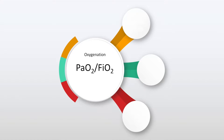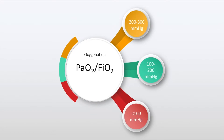The oxygenation as discussed in the previous slide is expressed as a ratio between the PaO2 and FiO2. We have three distinctions of this ratio: between 200 and 300, between 100 and 200, and less than 100. Mild ARDS is characterized by a PaO2/FiO2 of 200 to 300 mmHg.